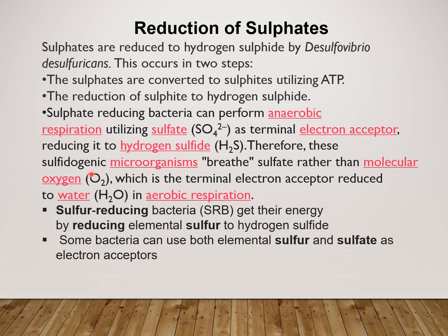These Sulphite-reducing microorganisms breathe Sulphite rather than molecular oxygen, which is the terminal electron acceptor that results in production of H2O in aerobic respiration. Sulphur-reducing bacteria (SRB) get their energy by reducing elemental Sulphur to Hydrogen Sulphide.